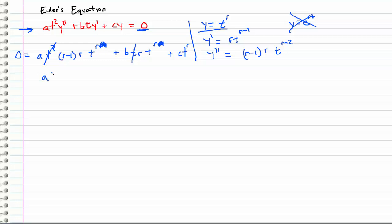We have a times r minus 1 times r times t to the r plus b times r t to the r plus c times t to the r all equals zero. So next we're going to divide by t to the r, just like we did previously except we had e to the r t. When we divide by that we get a characteristic equation and it looks kind of like what it does in the constant coefficient case, except it's a little bit different.